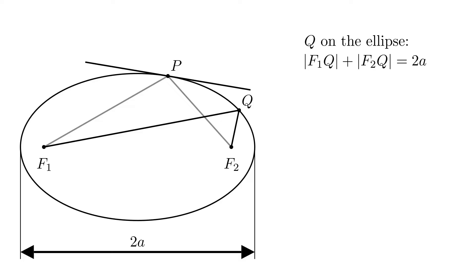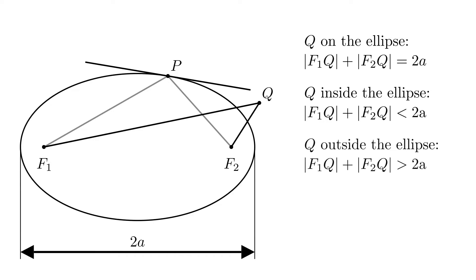The following we won't show in this video, so you can try it for yourself. And that is, when q is inside the ellipse, f1q plus f2q is less than 2a. And when q is outside the ellipse, f1q plus f2q is greater than 2a.